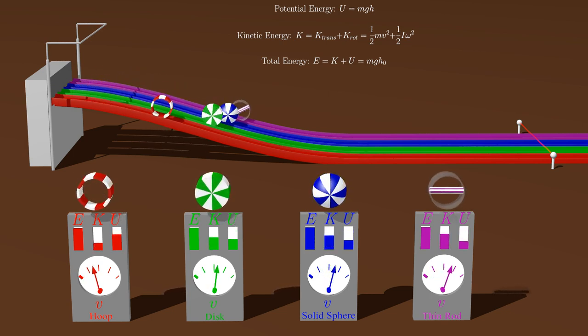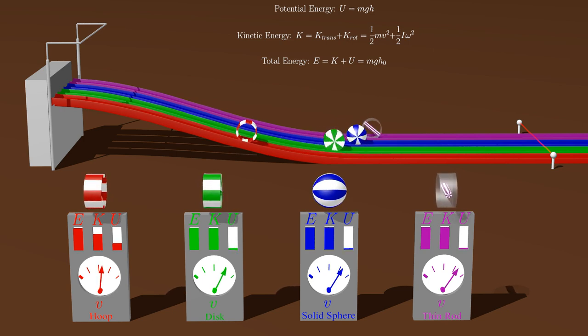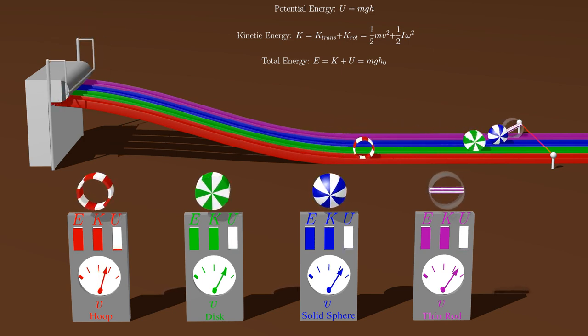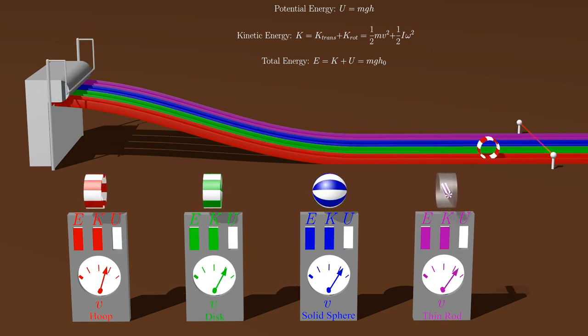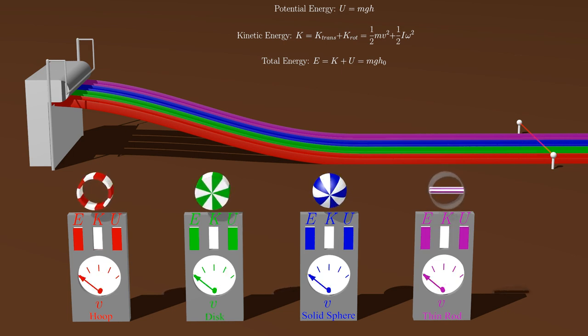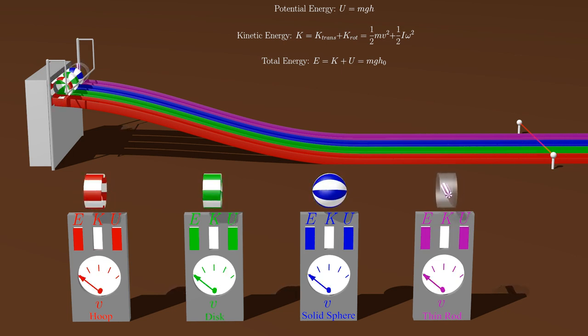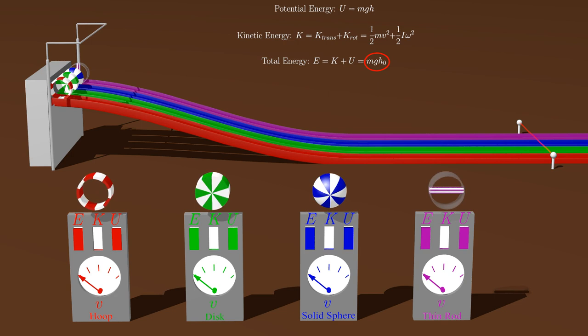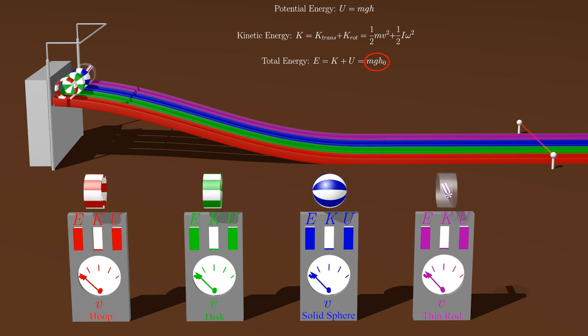It is useful here that the total energy is conserved, that is, its value will not change during the motion. Furthermore, because our object starts from rest, there is no initial kinetic energy and thus the total energy is determined strictly from the initial height.